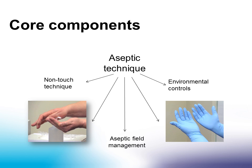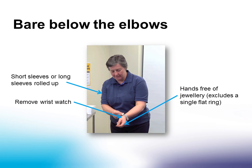Environmental controls ensure that environmental surfaces are clean prior to the procedure. Before undertaking an aseptic procedure, it is recommended that you are bare below the elbows. This ensures that clothing and jewellery do not hinder hand hygiene or the procedure. Bare below the elbows involves wearing short-sleeved clothing or rolling up long sleeves. Hands, wrists and forearms should be free of jewellery and watches, although in some circumstances a single flat ring may be worn.